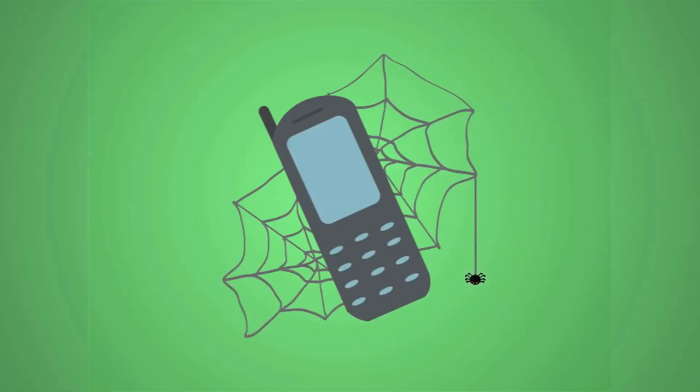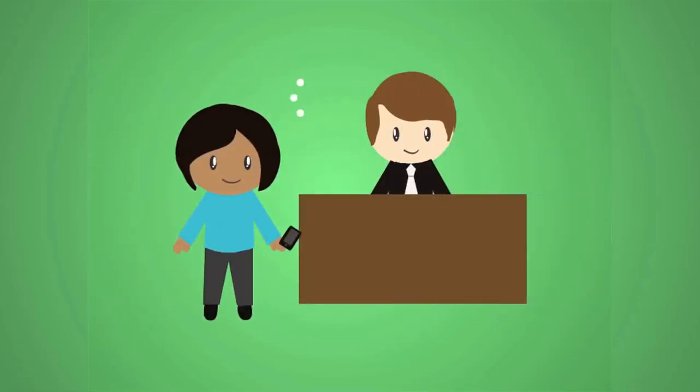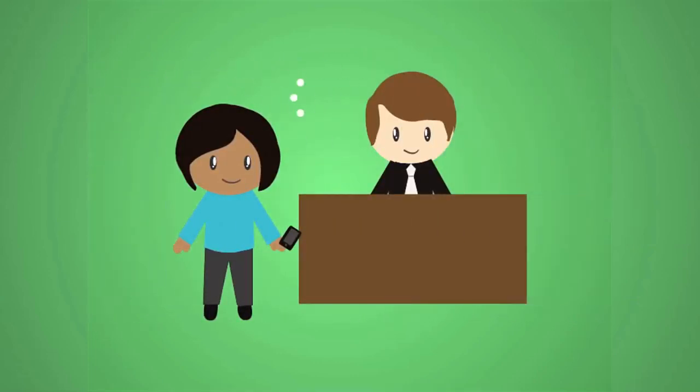Got an old cell phone that you don't use anymore? Recycle it. E-waste contains mercury and other toxins and is a growing environmental problem. Turn in your cell phone to a local electronics store and they'll take care of it for you.